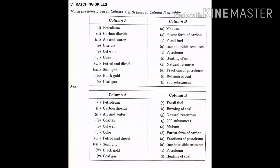Answer. Column A, Column B. First one petroleum is a fossil fuel. Second carbon dioxide is formed during the burning of coal. Number three air and water are natural resources. Coal tar contains 200 substances.